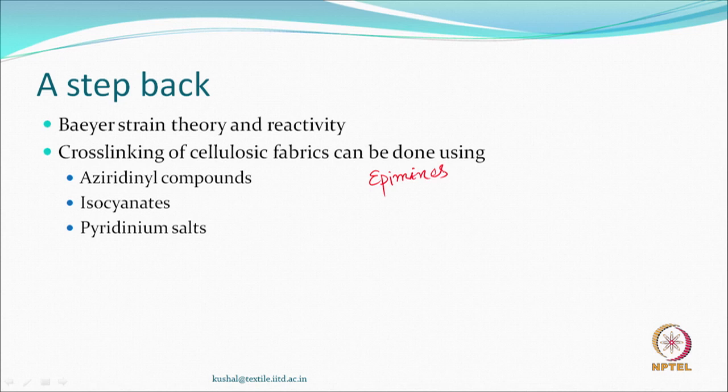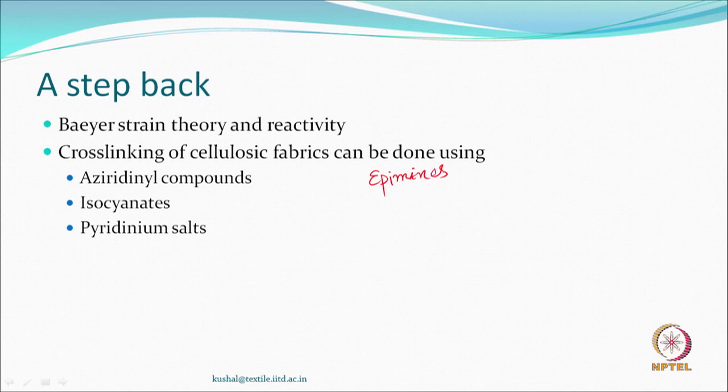Others were the isocyanates which can react, as we know, with alcohols - which is like the hydroxyl groups of cellulose - and also pyridinium salts which reacted as if they were chloroalkyl compounds. The byproduct at the end of the day was pyridine and an acid like HCl. So all of these were non-urea based nitrogenous compounds - they had nitrogen whether through the pyridine part, the isocyanate part, or the aziridine group.